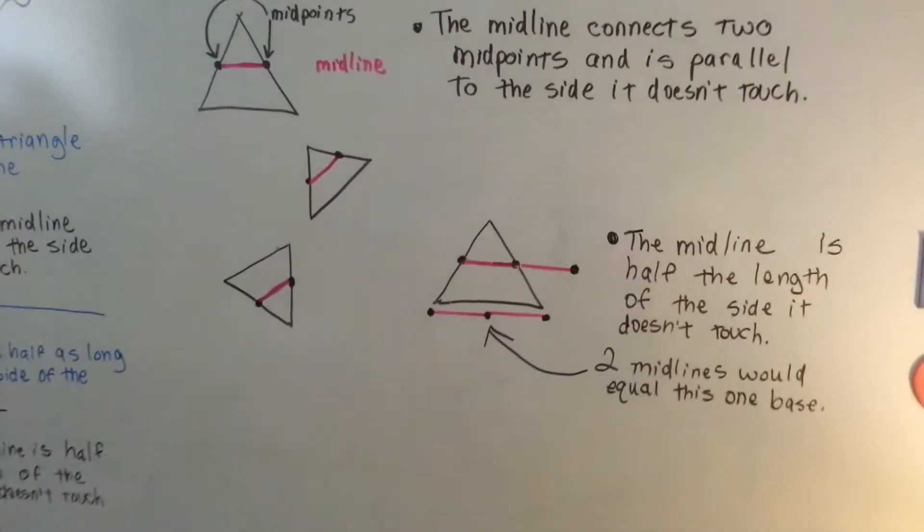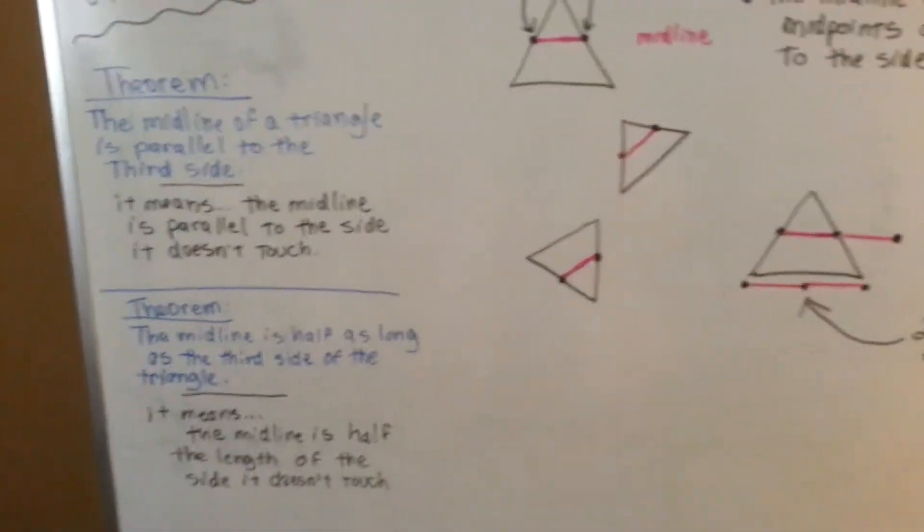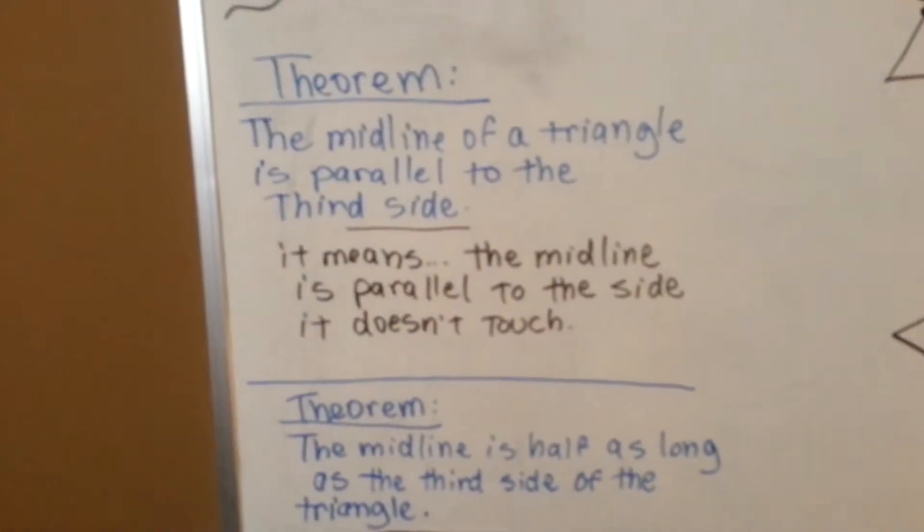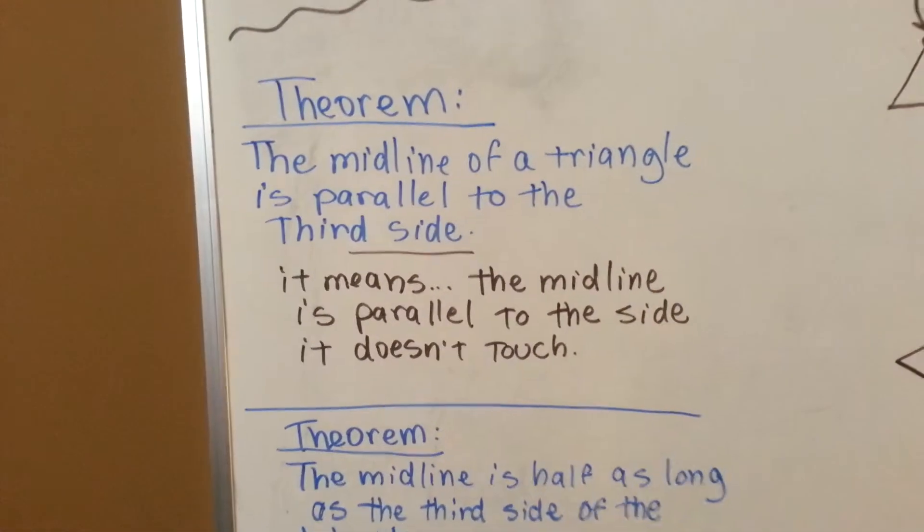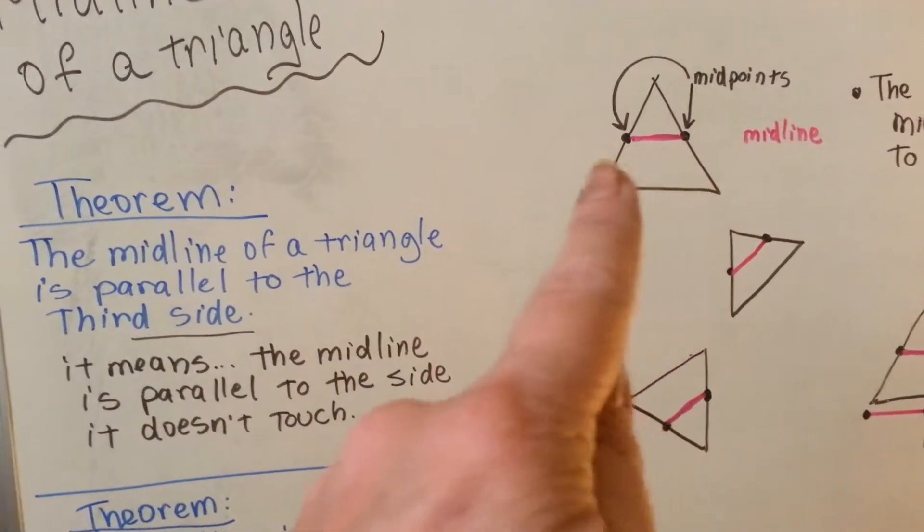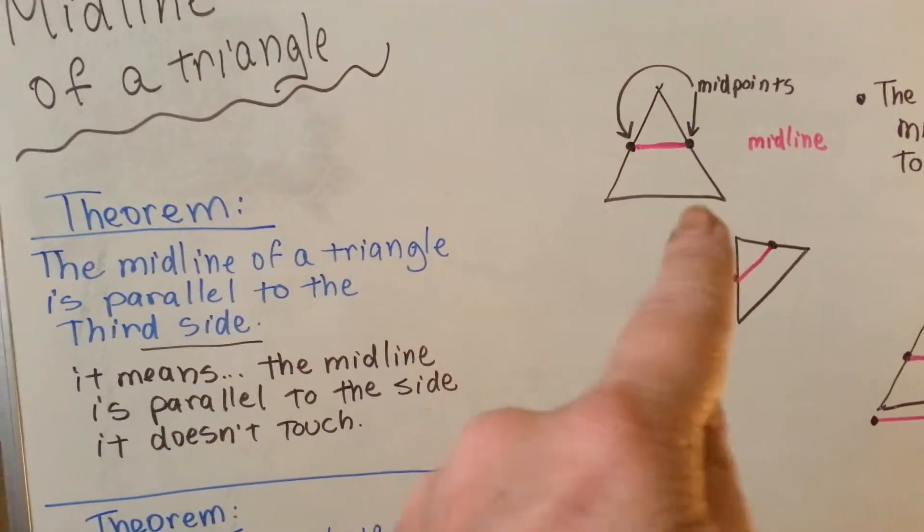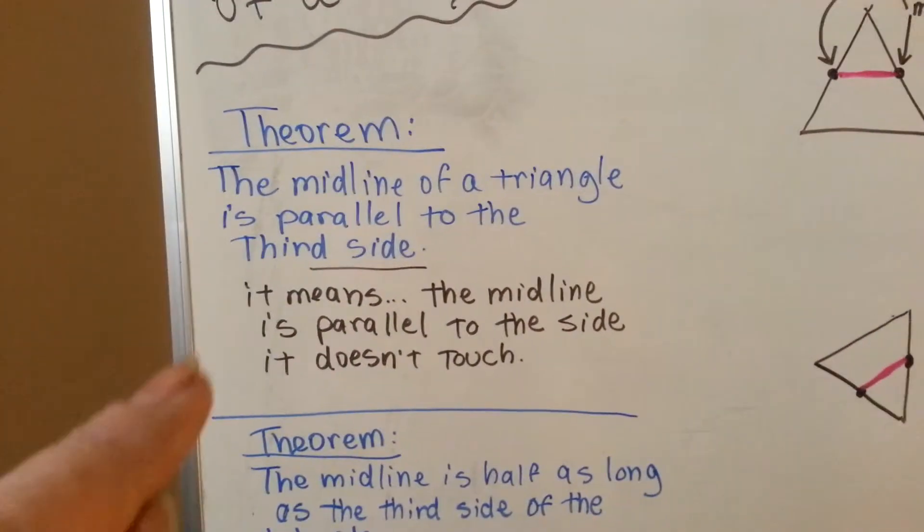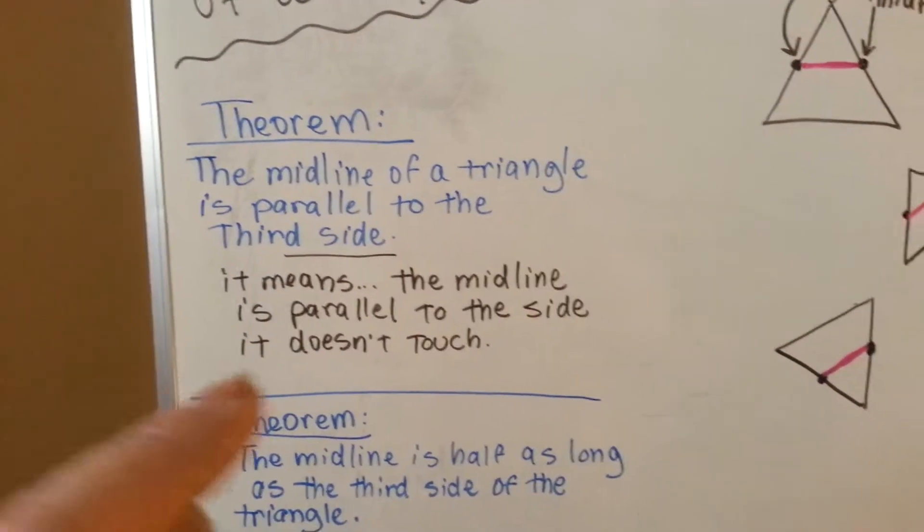So, guess what? I get to throw another theorem at you that you're going to be able to use in proofs. Here we go. The midline of a triangle is parallel to the third side. It's parallel to this third side. See? Which means it's parallel to the side it doesn't touch.